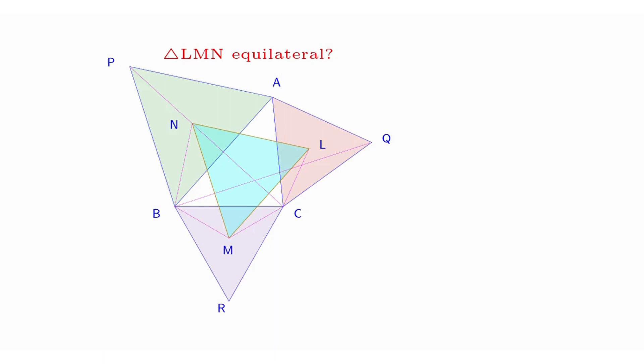First, we will prove that PC equals BQ. After joining the lines PC, BQ, BM, BN, CM, and CL, consider two triangles PAC and BAQ. We see that AP equals AB as triangle ABP is equilateral.